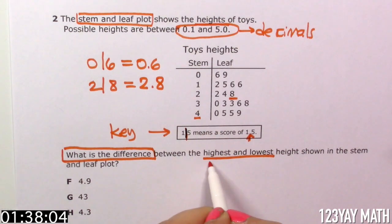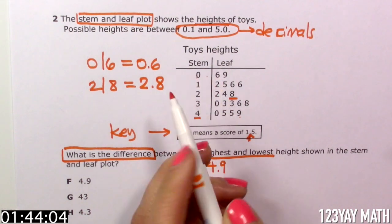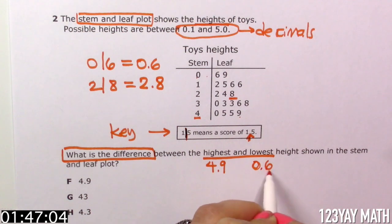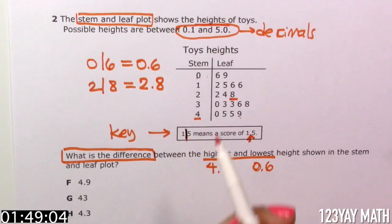The highest is 4 and 9, 4.9. And the lowest is 0 line 6, which means 0 decimal point 6. Let's subtract them.